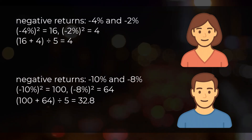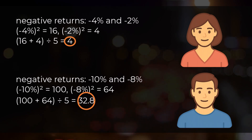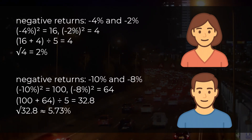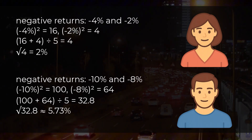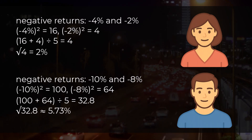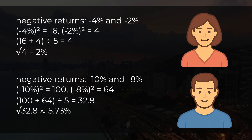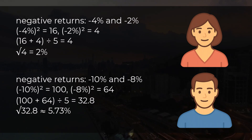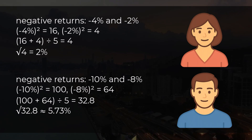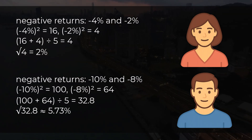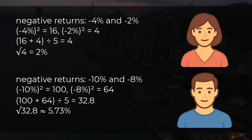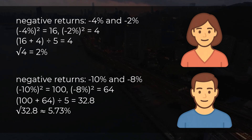For Sarah the average of squared negative returns is 4, and for Mike it is 32.8. Next, we calculate the downside volatility by taking the square root: for Sarah the square root of 4 gives us 2%, and for Mike the square root of 32.8 gives us 5.73%. Sarah's downside volatility is 2%, while Mike's is much higher at 5.73%, indicating that Mike's returns are much riskier.